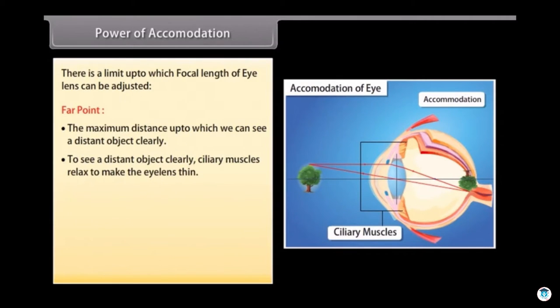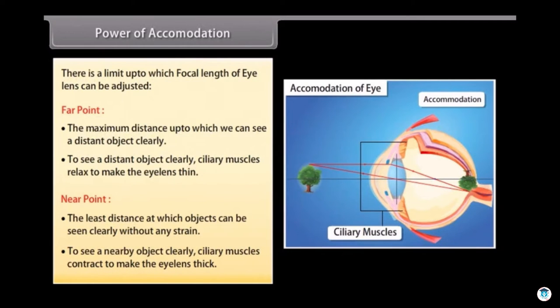Near point: The least distance at which objects can be seen clearly without any strain. To see a nearby object clearly, ciliary muscles contract to make the eye lens thick.